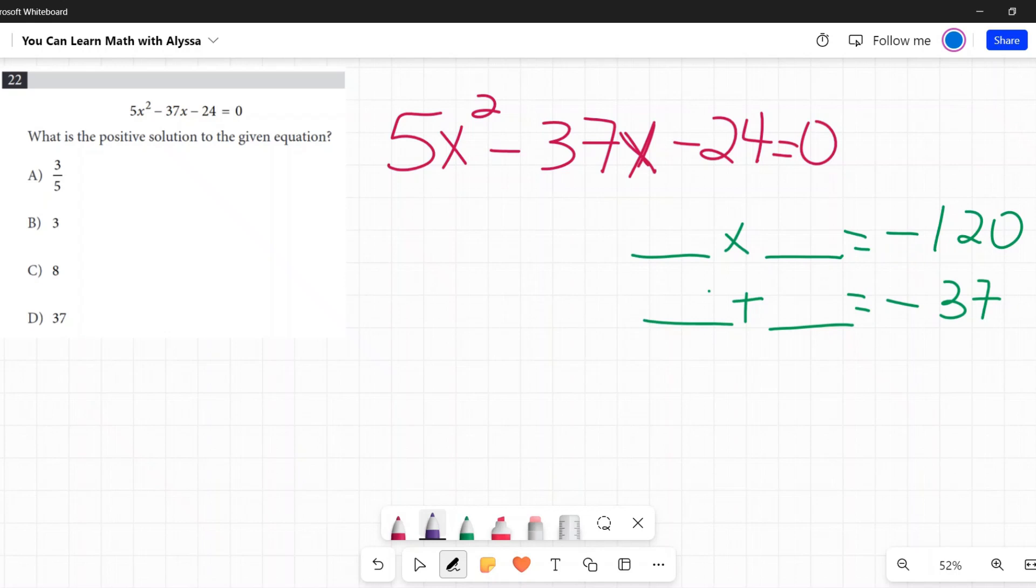So what goes into 120? 2 goes into 120 60 times. 3 goes into it 40 times. And right there, right off the bat, I'm like, wait, 3 and 40 are 37 apart. I think I found it already. So what if this was a negative 40 and a positive 3? Those would add together to get negative 37 and they would multiply together to get a negative 120. So I've already found my answer. I don't have to go any further.